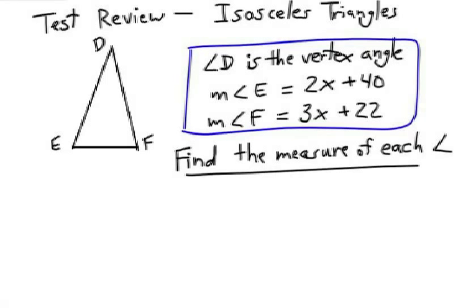This problem involves solving an isosceles triangle. Angle D is the vertex angle and angle E and angle F are measured as you can see in algebraic terms. Find the measure of each angle.